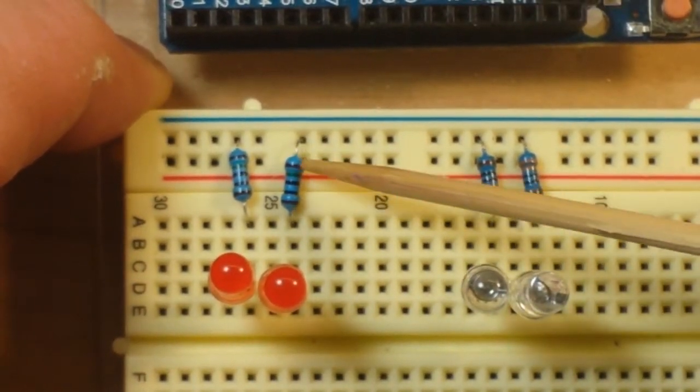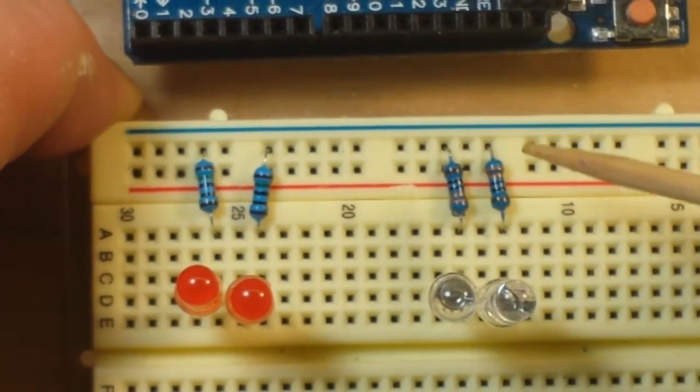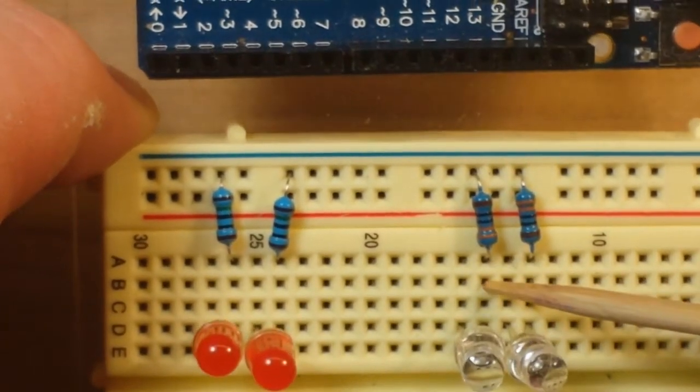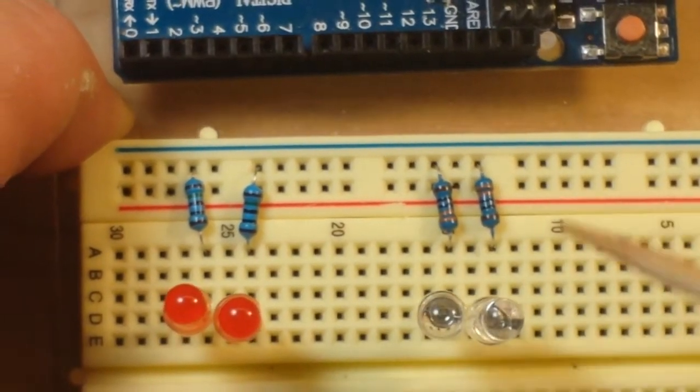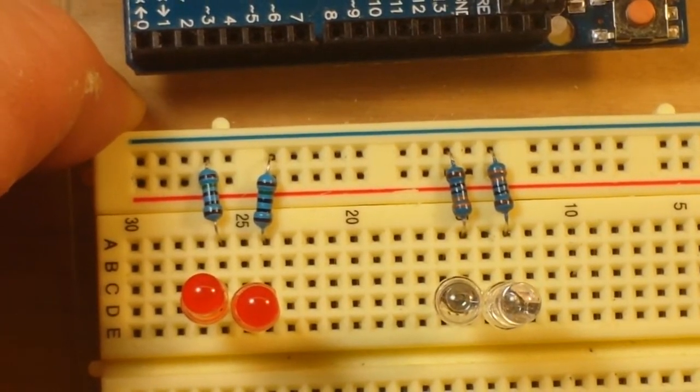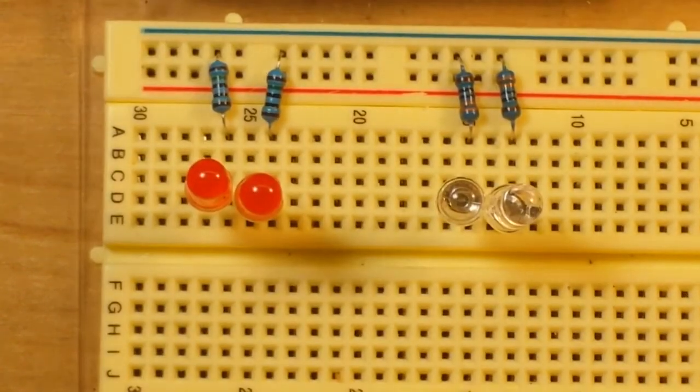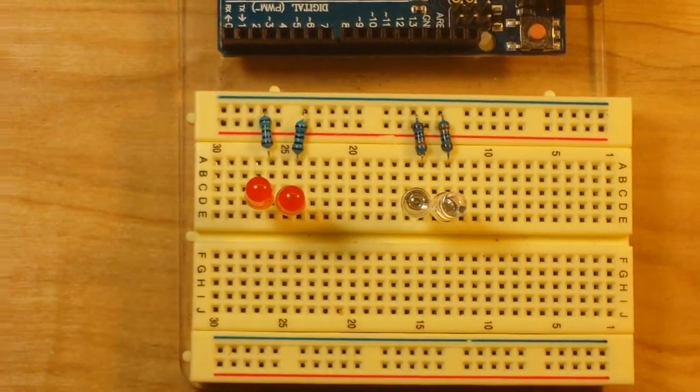So now I have the 150 ohm resistors going from the cathode, the negative leg, to ground, which is the blue line up here on the red LEDs. And the other one, the 180s, going from the cathode, the negative leg, also to ground up here. We lose our focus there. Okay.